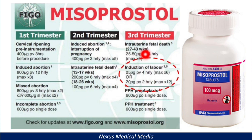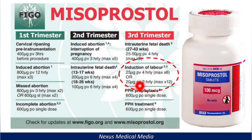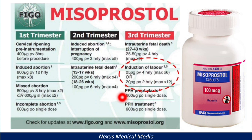During the third trimester for intrauterine fetal death at 27 to 43 weeks, use 25 to 50 micrograms per vaginally every four hours. For induction of labor, the same dose applies — 25 micrograms per vaginally every four hours, or 20 micrograms orally every two hours or sublingually. For postpartum hemorrhage prophylaxis and treatment, give 600 micrograms orally as a single dose.